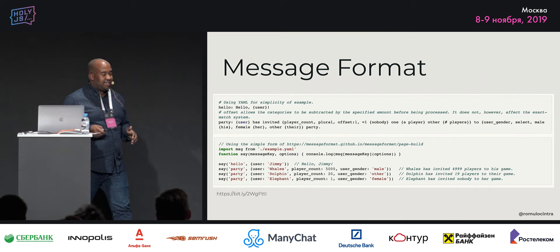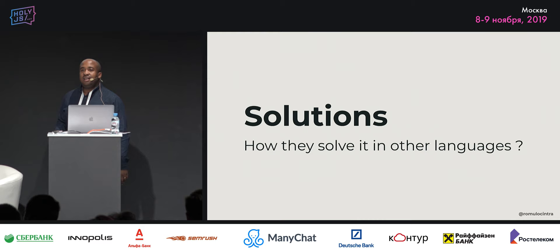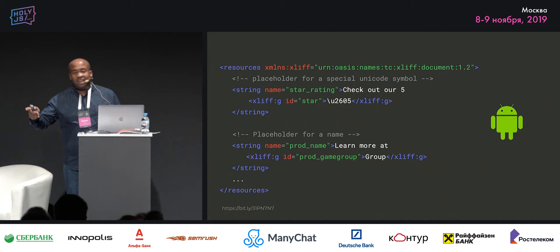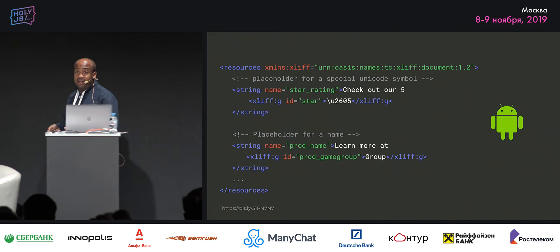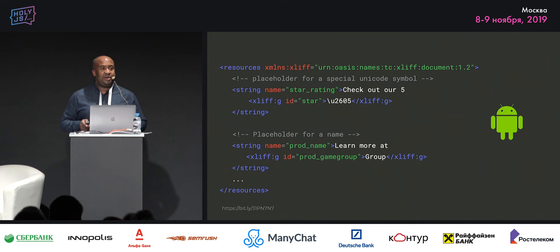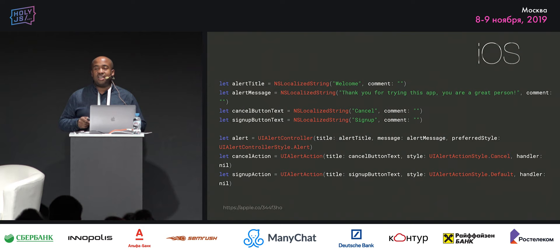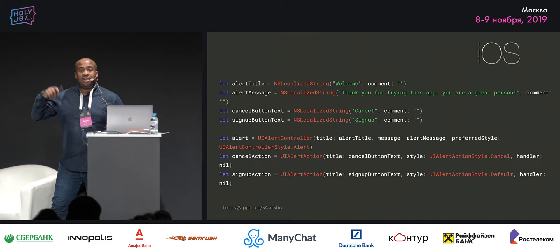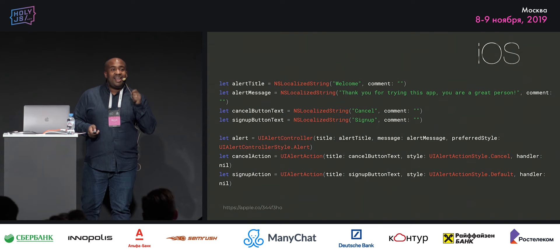Other languages already solve this in different ways. In Android, they have the message format implemented in Java. They use their own formatting to write the strings, and they don't need any library to do it because Android already does it. You also have the case of iOS — they have a very similar API. You have your string, you send your interpolation, and it's already translated. Built into the system.